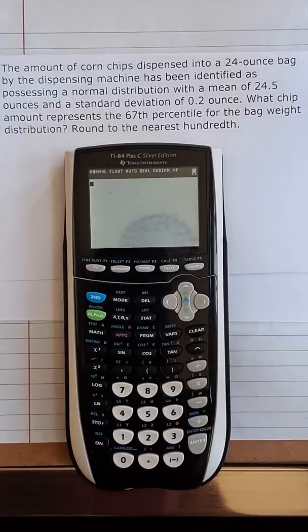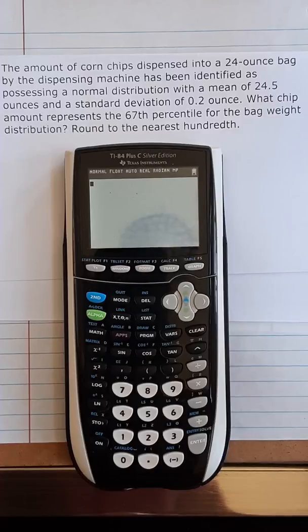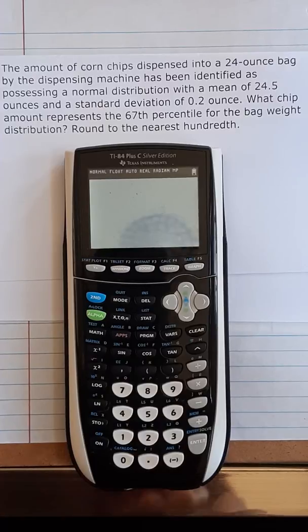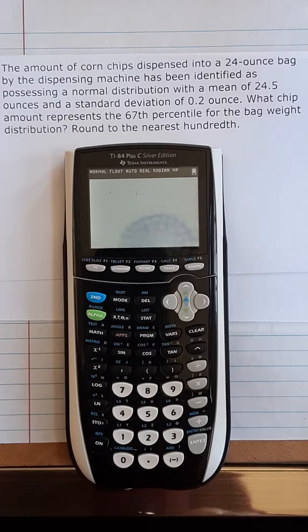So this probability given means that the area is given, so we have to find the weight of the chip bag. So it's basically an inverse normal distribution problem.